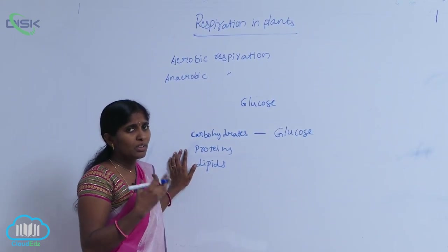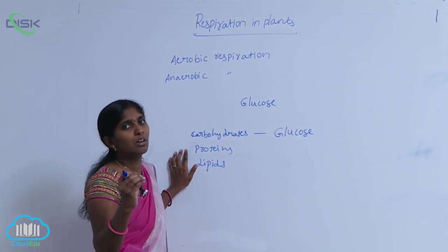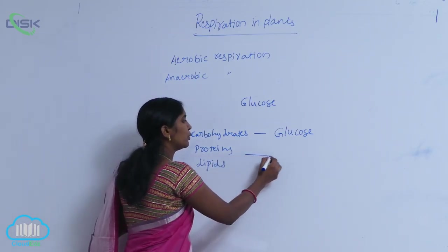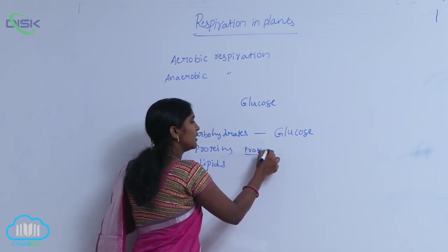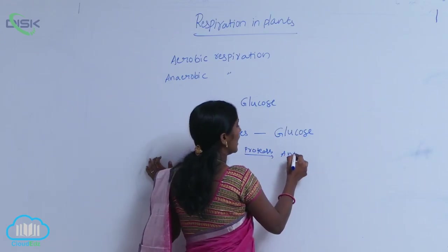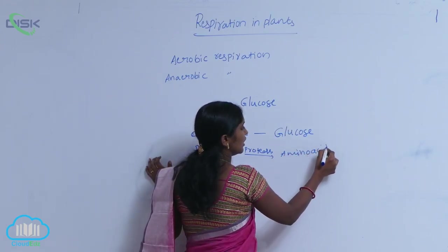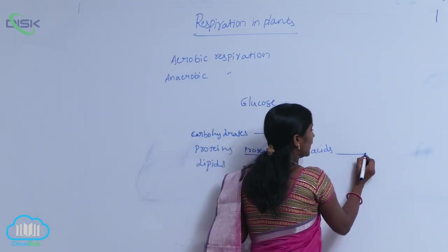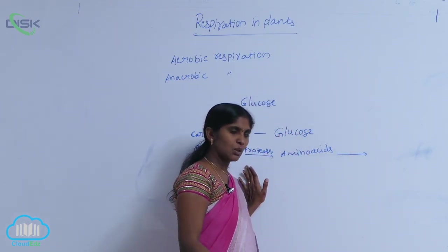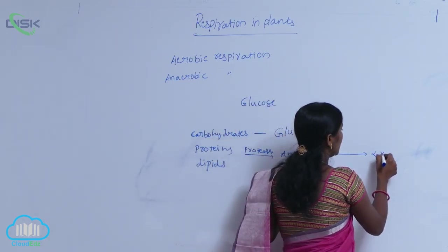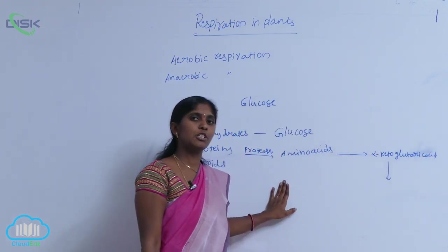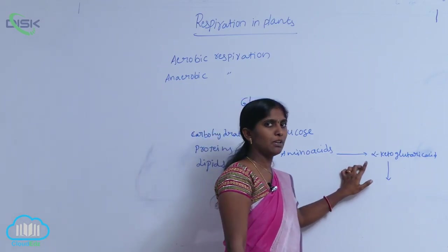Proteins are polymers of amino acids. In the presence of protease enzymes, proteins are turned into their simple forms — amino acids. When amino acids are cleaved or broken down into simpler forms, they form alpha-keto glutaric acid, which can then be involved in respiration.